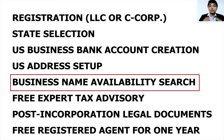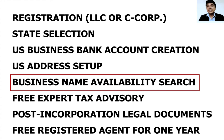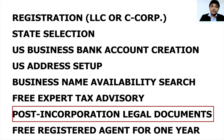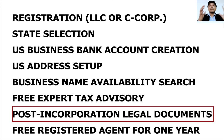After state selection and address setup, you have to do a business name availability search — the name you want for your company will be checked, and if it is taken you will have to change it. You also need to consider tax details: how much tax to pay and when. Then come the post-incorporation legal documents — when you establish a company, you have legalized documents and post-establishment legal authority, including company formation documents.